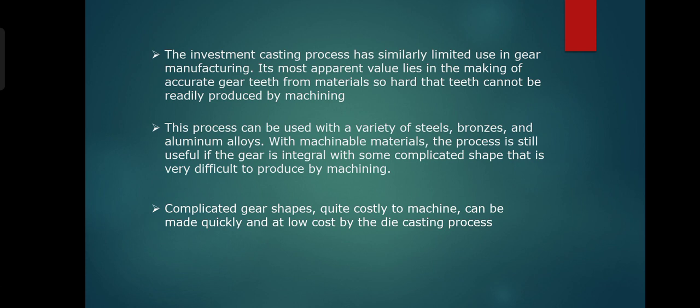bronzes and aluminum alloys with machinable materials. The process is still useful if the gear is integral with some complicated shape that is very difficult to produce by machining. The complicated gear shapes, quite costly to machine, can be made quickly at low cost.